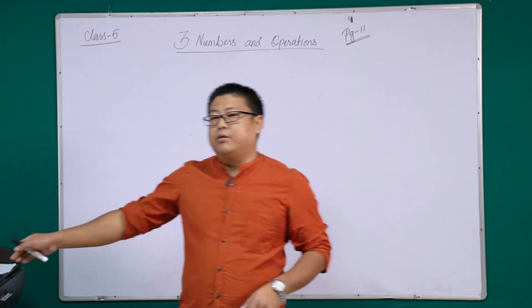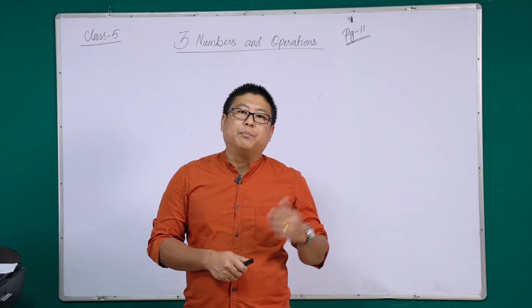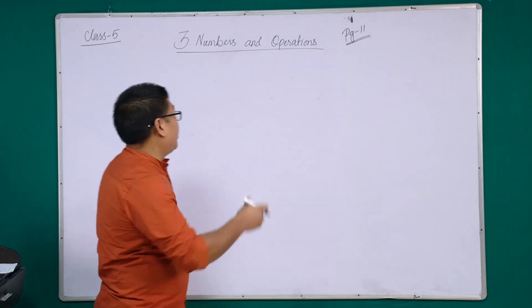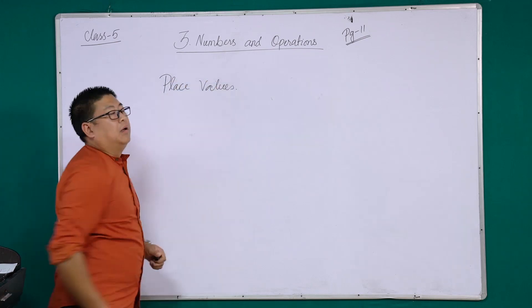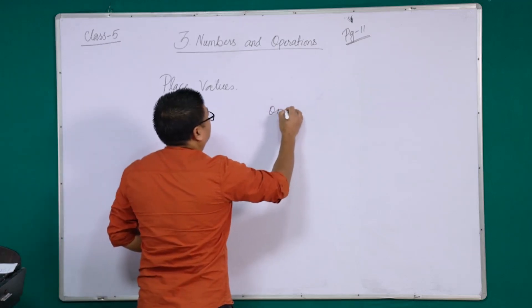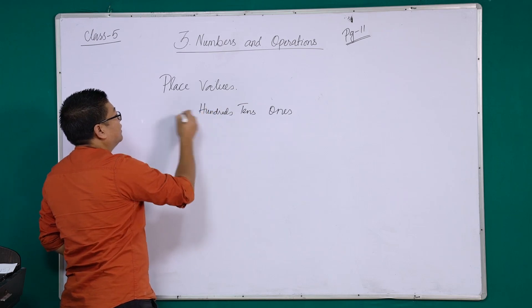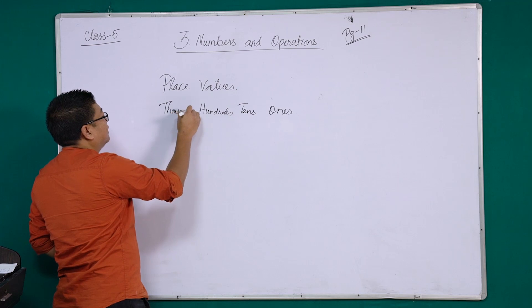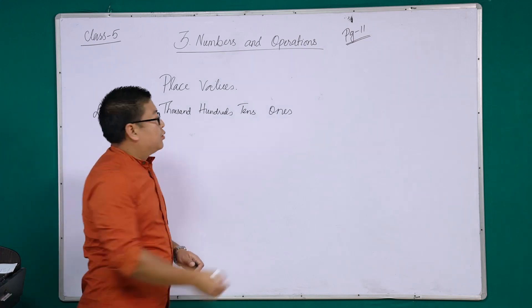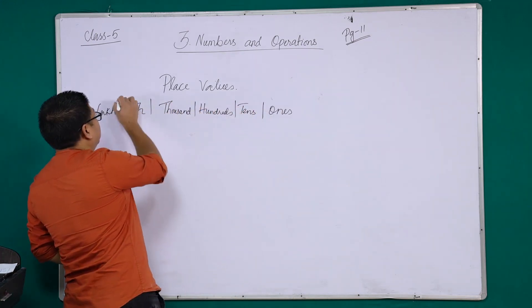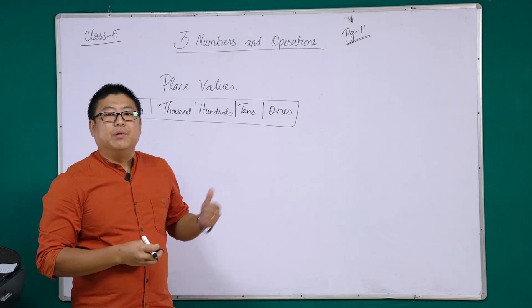Before we start off with the chapter, let's go back and have a review of the previous lessons that we have learned. I'm sure you have all learned of place values. Place values are nothing but ones, tens, hundreds, thousands, ten thousands, lakh — it goes on. These place values play a very important role in numbers and operations.